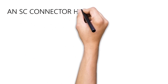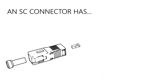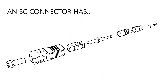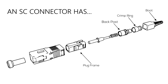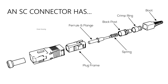If you take apart an SC connector, you will find that it's made of many components. There's the boot and crimp ring that is used to support and secure the different types of fiber cables to the connector. The plug frame and back post holds the fiber ferrule and the spring that ensures a good connection. The connector housing holds the connector together and provides grip and key to guide the connector termination.